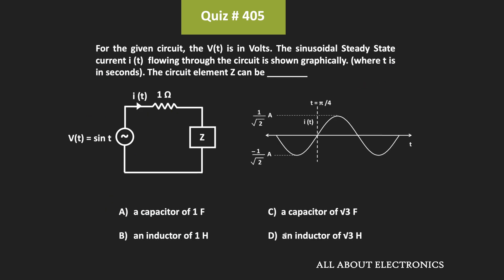So from this we can say that for the given circuit, this circuit element Z is an inductor and its value is equal to 1 Henry. And therefore, for the given question, this B is the correct answer.